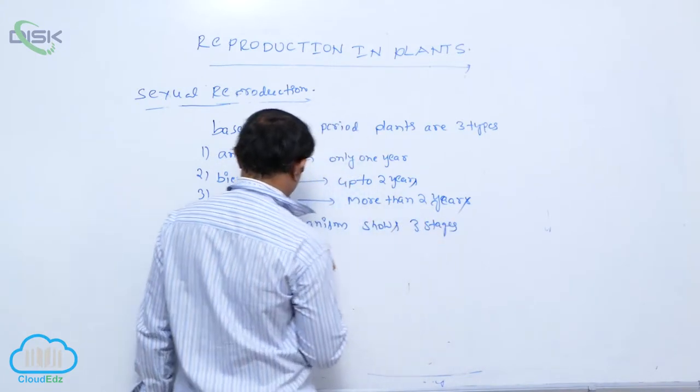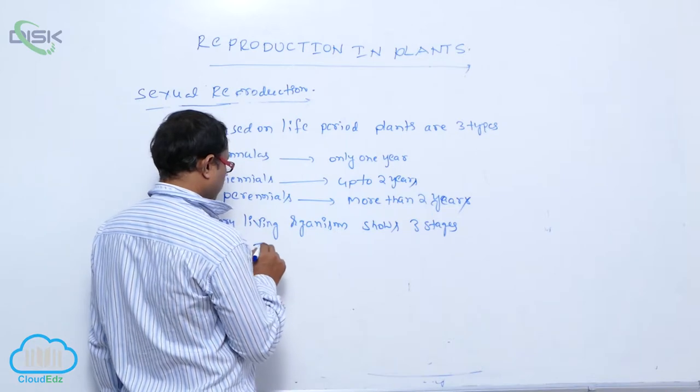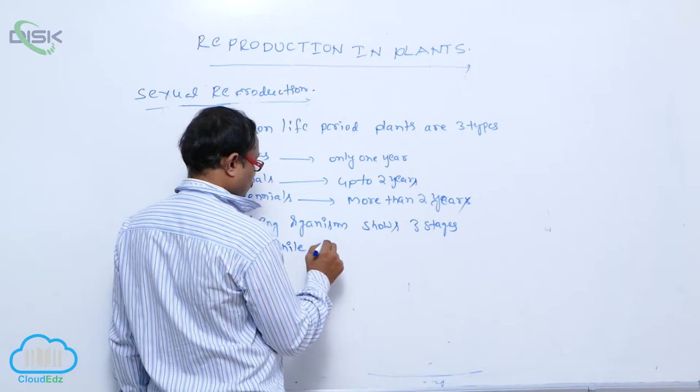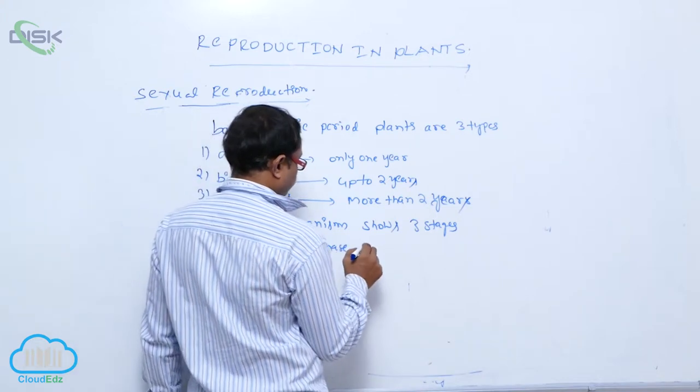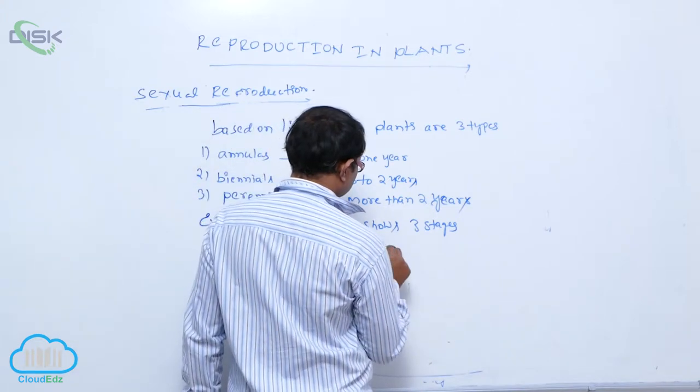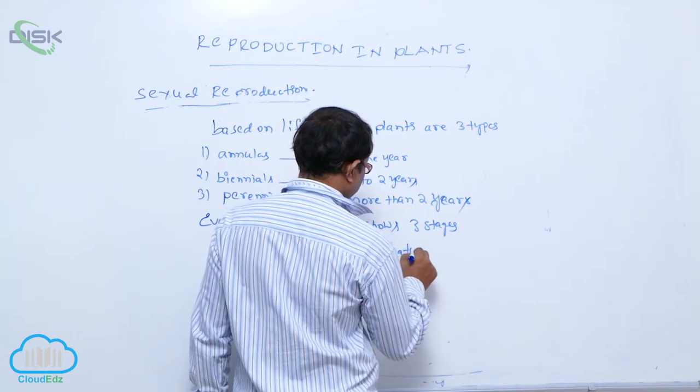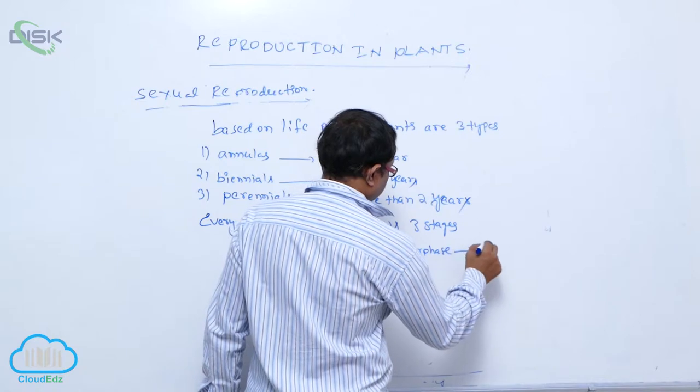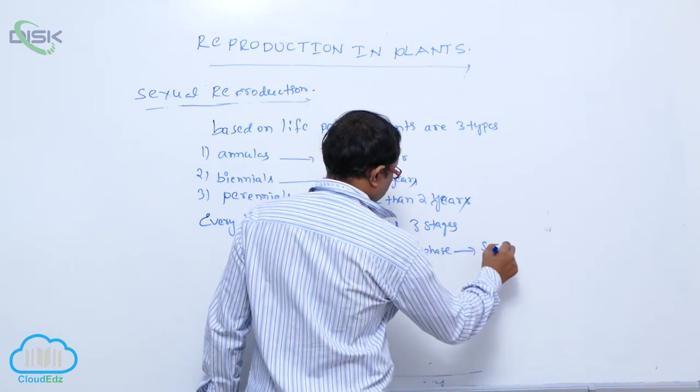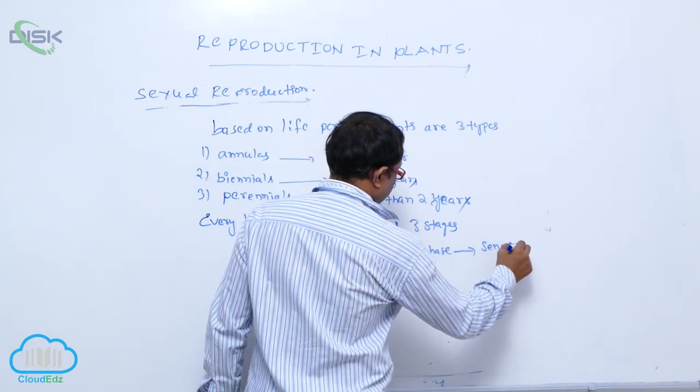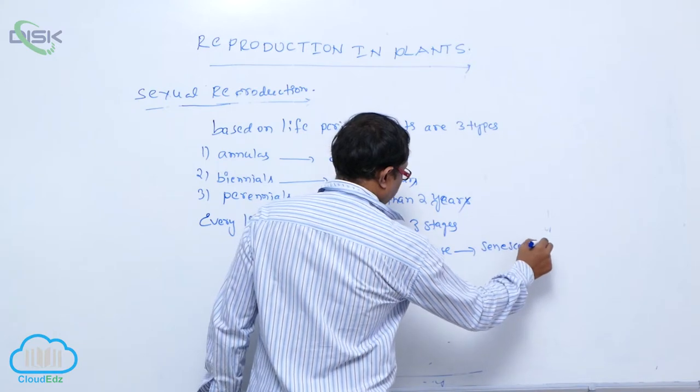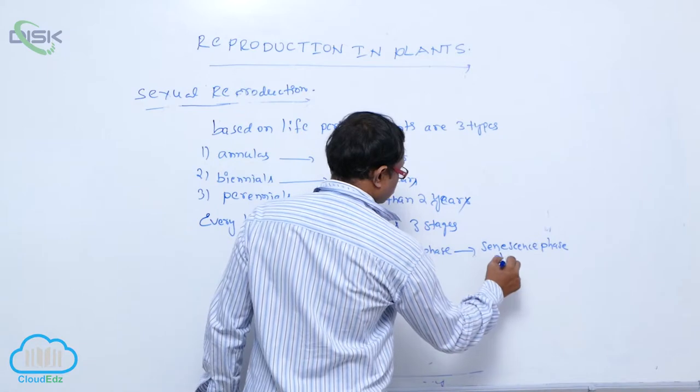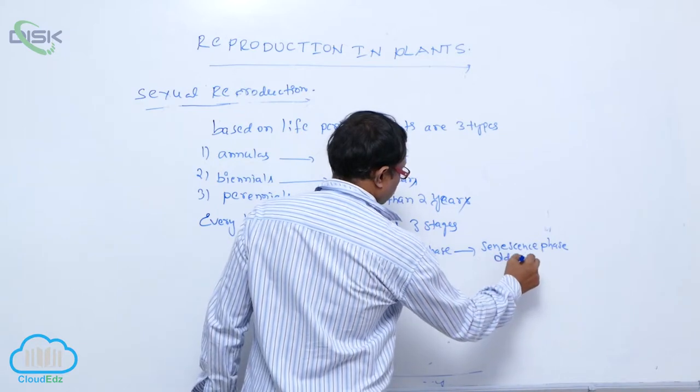What are they? Juvenile phase, mature phase, senescence phase. Senescence means it is old age. After that, death.